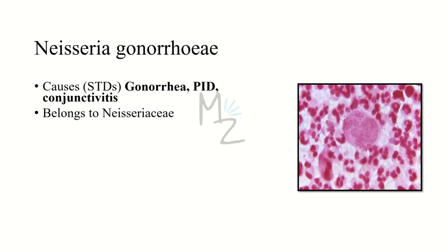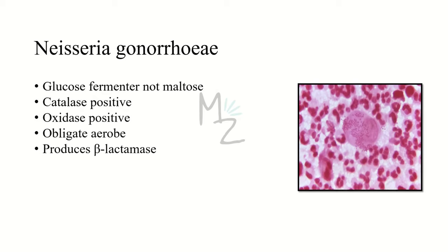Neisseria gonorrhea or gonococcus is responsible for causing STDs like gonorrhea, PID (pelvic inflammatory disease), and conjunctivitis. It belongs to the family Neisseriaceae. Unlike Neisseria meningitidis, Neisseria gonorrhea does not ferment maltose along with glucose. It is catalase positive, oxidase positive, and is an obligate aerobe. It produces beta-lactamase, that is penicillinase, because it has some strains resistant to penicillin — which was not the case with Neisseria meningitidis.